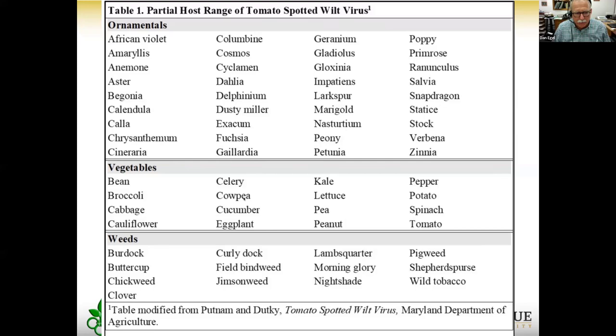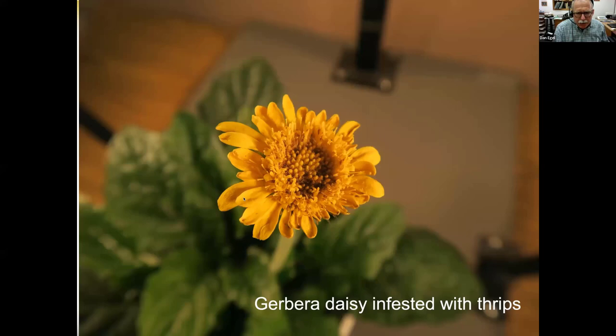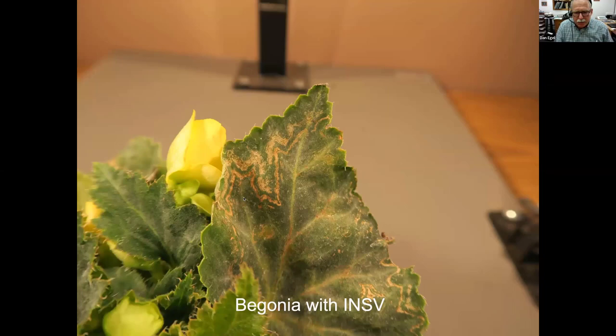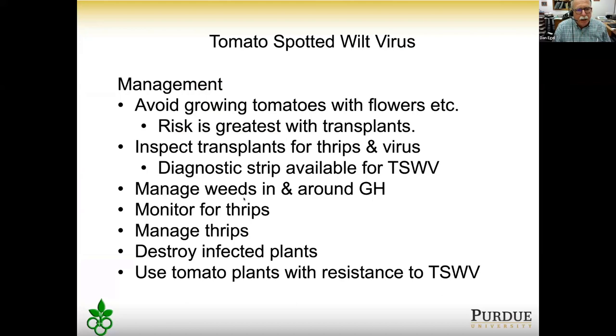This flower came from a greenhouse growing bedding plants including tomatoes. It's fall, and the flower is full of thrips — you can see the feeding damage. Once thrips are in your greenhouse, whether it's full of bedding plants or tomatoes, it can be a challenge to get rid of them, and they can harbor and transmit the virus. This is a begonia showing INSV symptoms — an advancing wave pattern that seems to progress through the leaf.